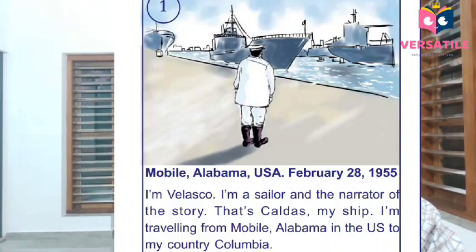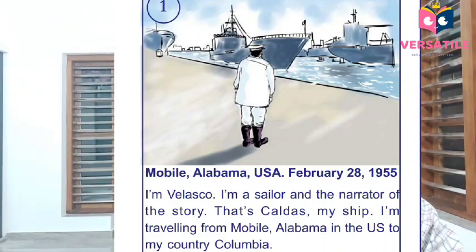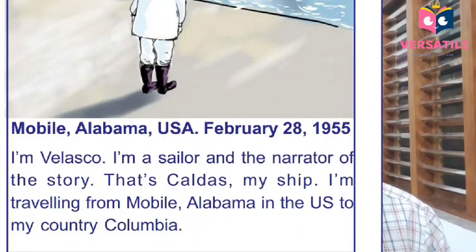In the first picture you can see Velasco standing there watching his ship. All the information is written just under the picture: Mobile, Alabama, USA, February 28, 1955. 'I am Velasco' — you are telling it from the point of view of Velasco. 'I am Velasco, I am a sailor and the narrator of the story. That's the Caldas, my ship. I'm travelling from Mobile, Alabama in the US to my country, Colombia.' The answer to the first picture is already there in the textbook.